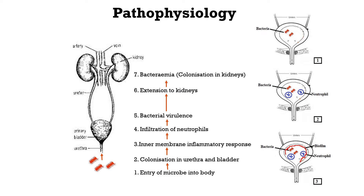Slowly the infection protrudes further into the urinary tract. So this is the process flow of infection — steps one, two and three.